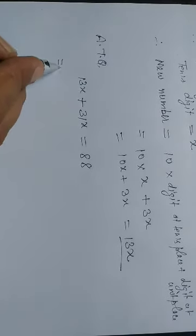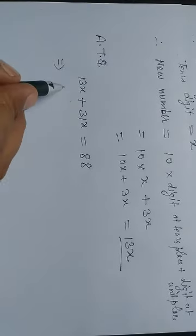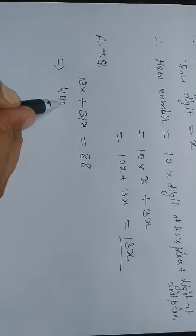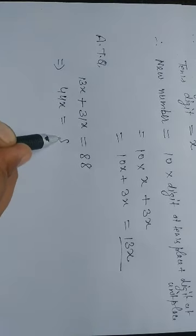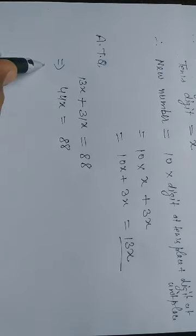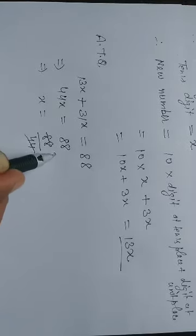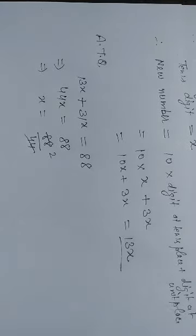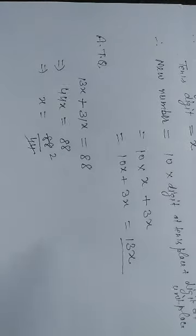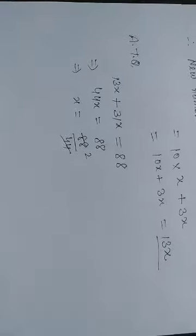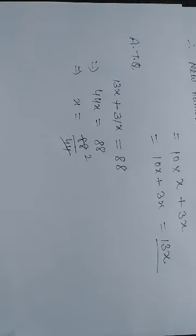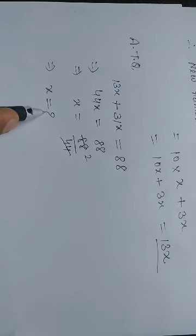That implies 44x is equal to 88. That implies x is equal to 88 upon 44, which gives x is equal to 2.